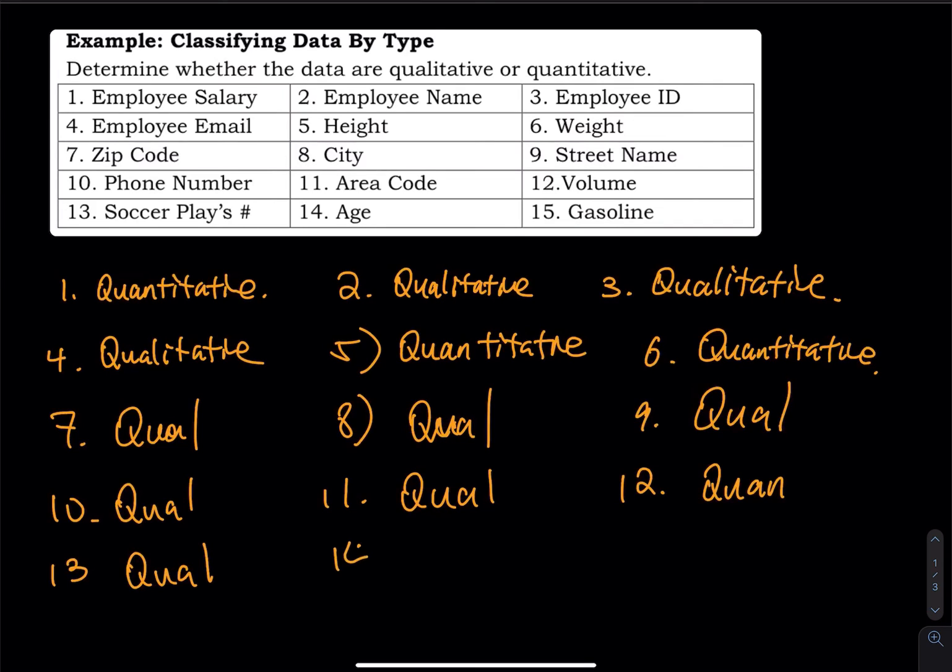Number 14, age. Can you find the average age in a classroom? Yes. You add them up and then divide it by the number of people in the room. So that must be quantitative. 15, gasoline. What is the miles per gallon of your car? Cities, highway. You give me a number - 20 mpg. So that is quantitative. A number followed by a unit. So it's quantitative. So that will be the end of this video.